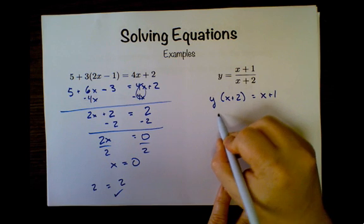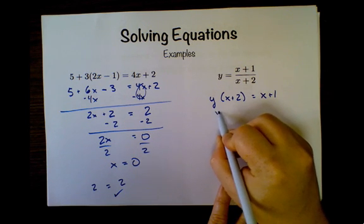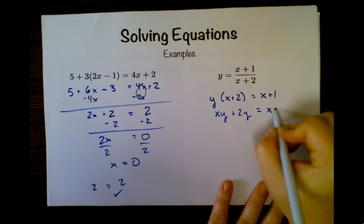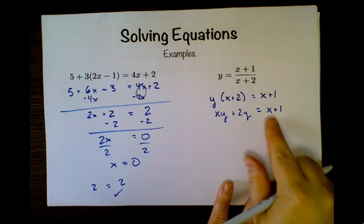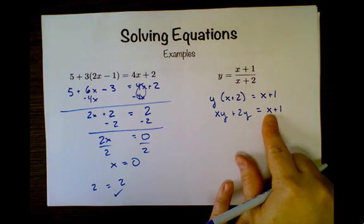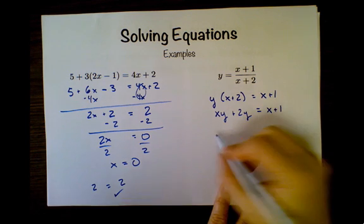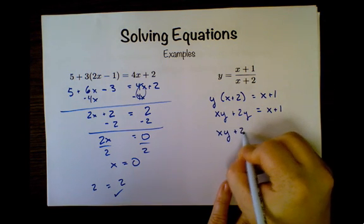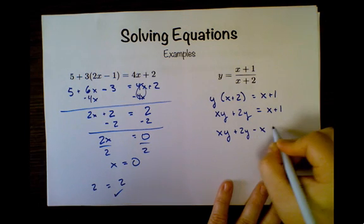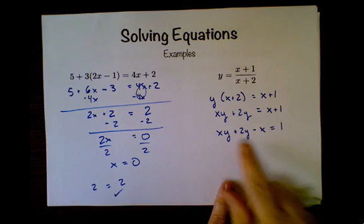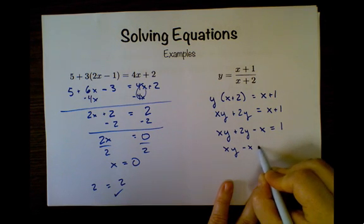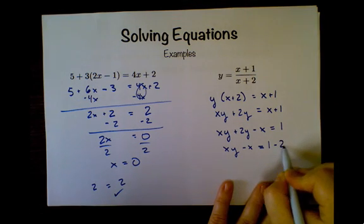I'm going to distribute my y, so I have x times y plus 2y equals x plus 1. I'm going to subtract an x from both sides, so I have xy plus 2y minus x equals 1. And I'm going to take away 2y from both sides, so xy minus x equals 1 minus 2y.